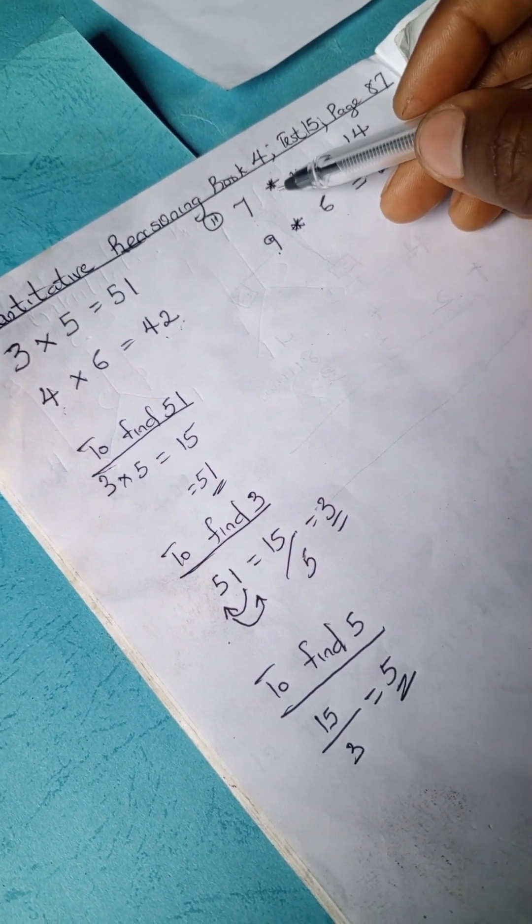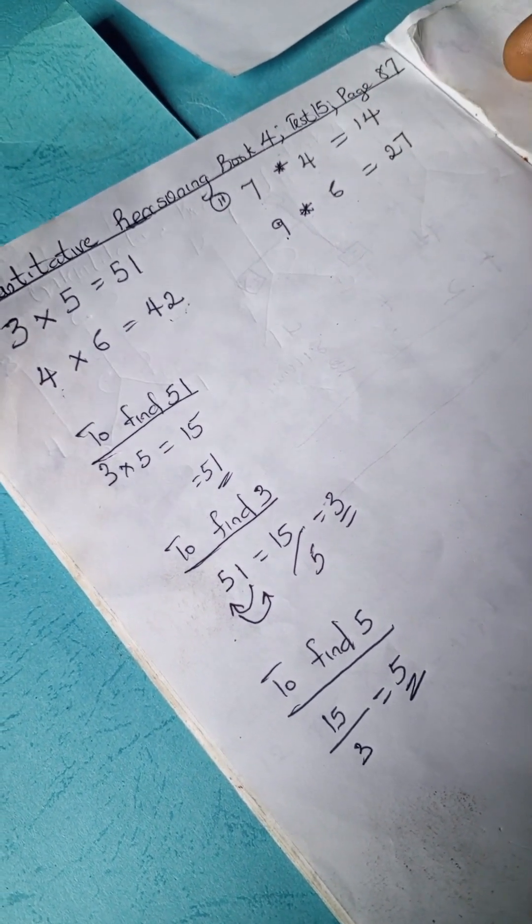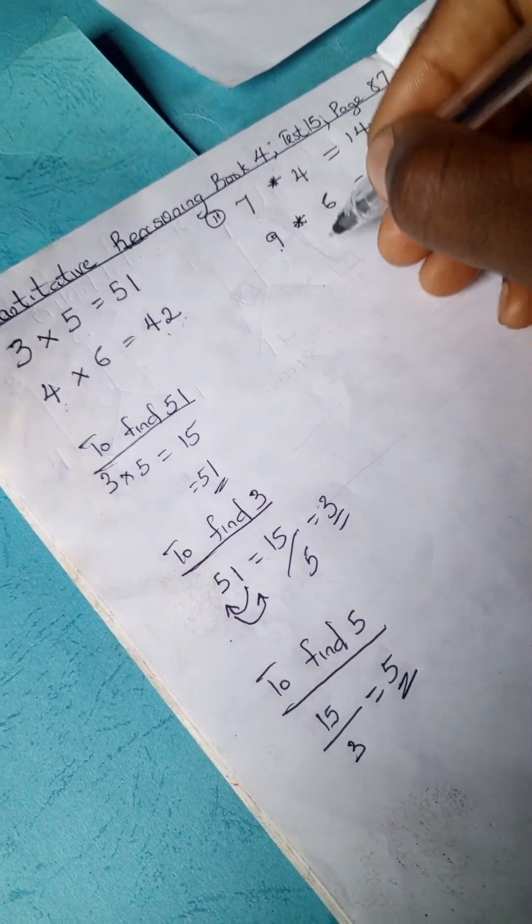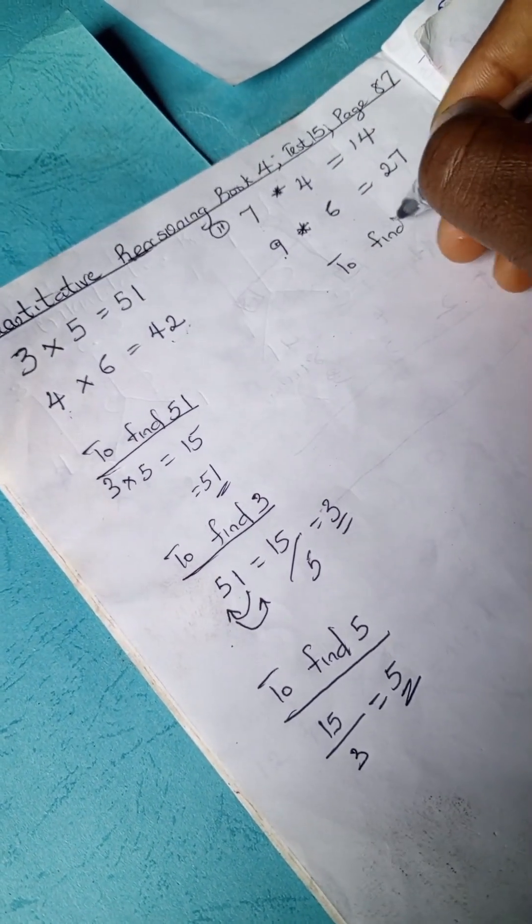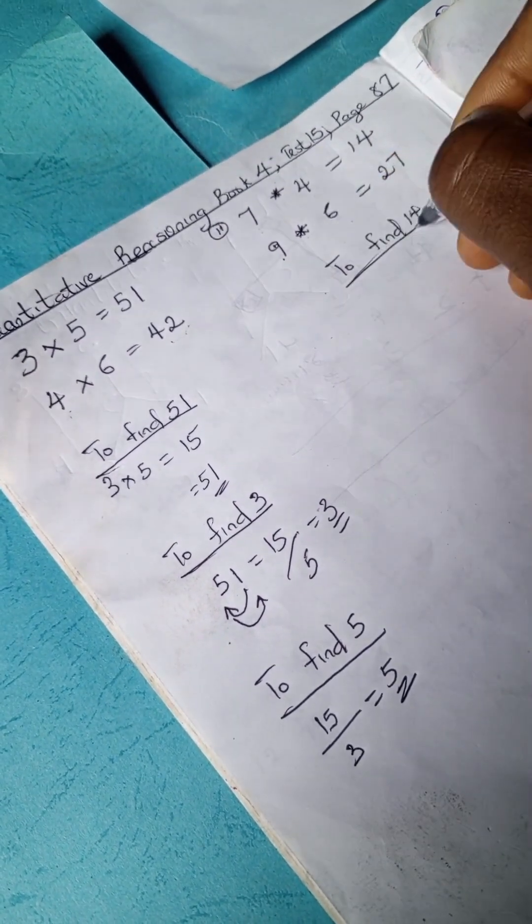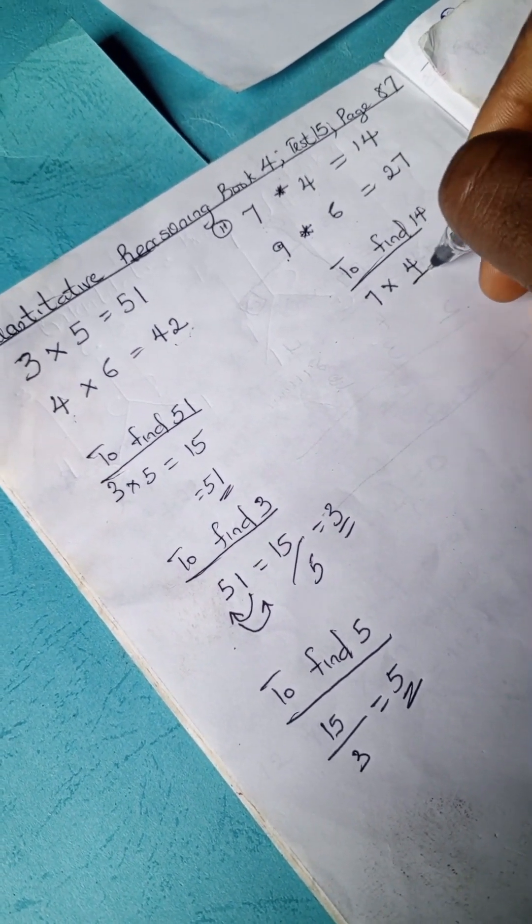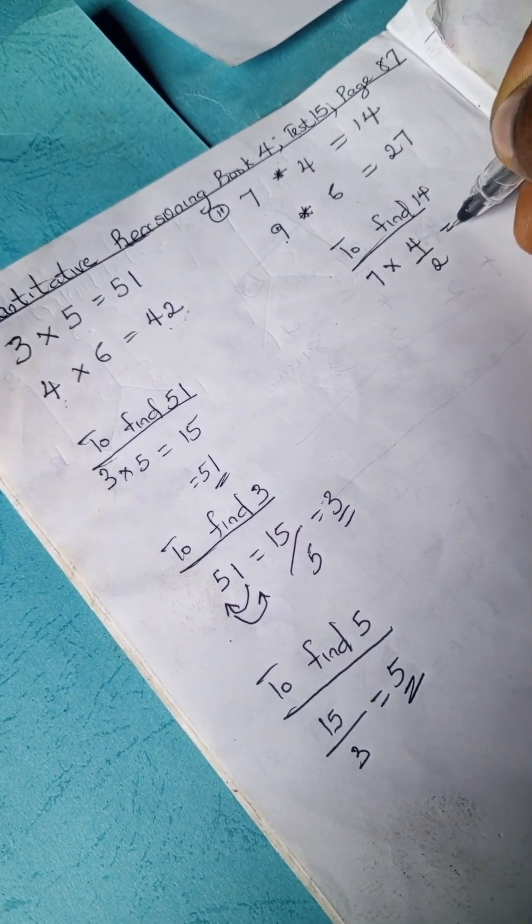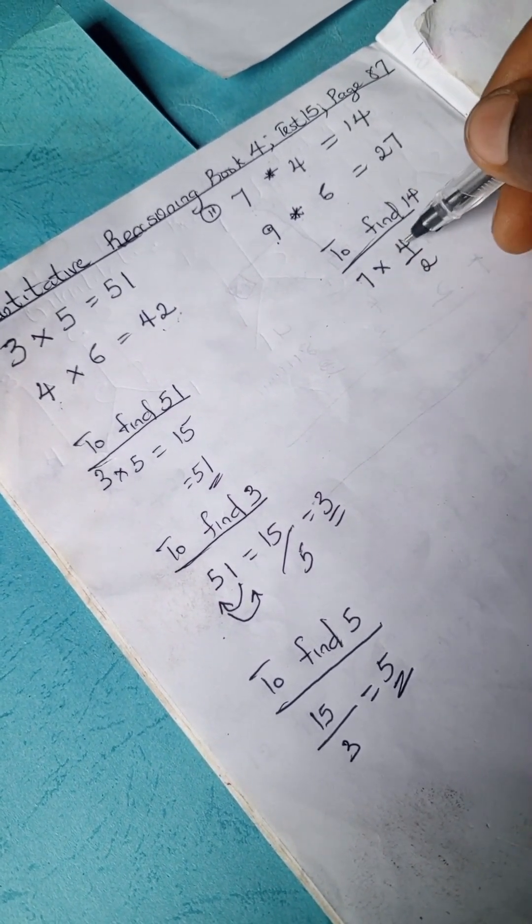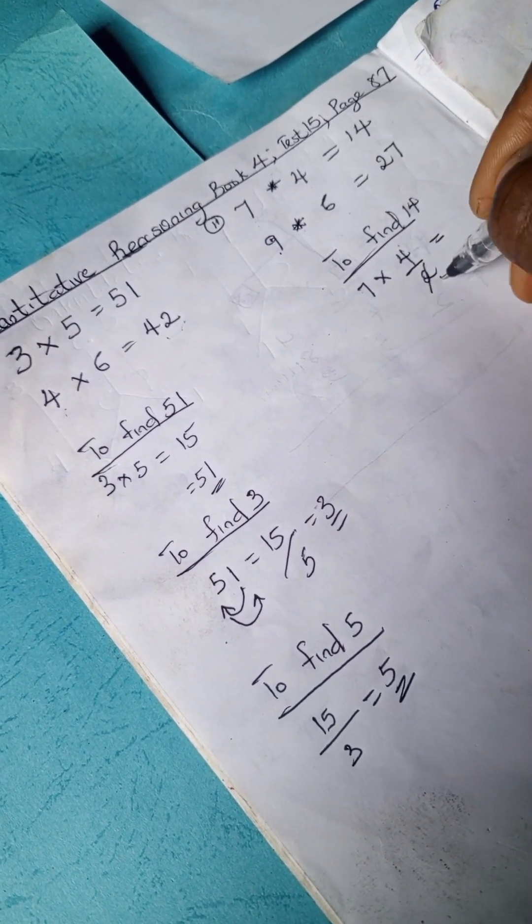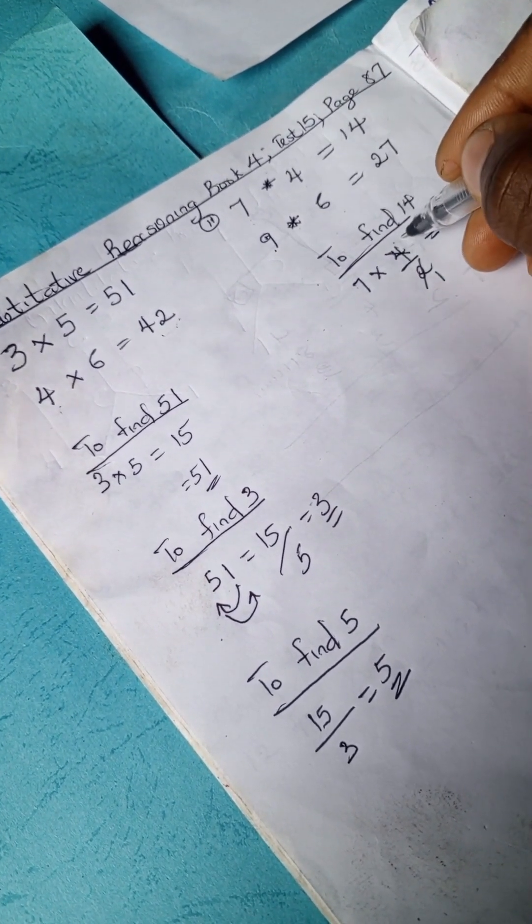So let's move on to this. We have 7 asterisk 4. Now we want to find 14. We simply have 7 times 4 divided by 2. So 7 times 4 divided by 2 is 2, so we have 2 here is 2, 2 in 4 we have 2, so 7 times 2 is 14.